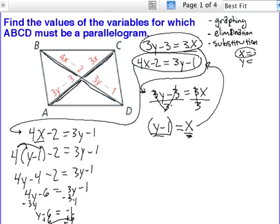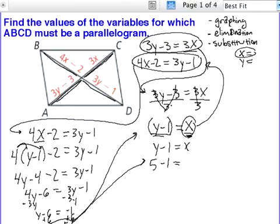Now that I know what y is, I can go back, and I can plug it in over here to find x. So if I've got y minus 1 equals x, and I just put 5 in for y, I get 5 minus 1 equals x, and we have 4 equals x.